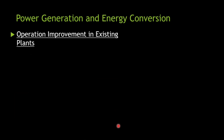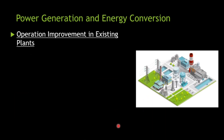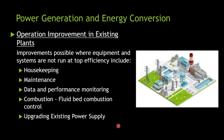For power generation and energy conversions, operation improvements in existing plants are key — that is why modernization of current power plants is important. Good housekeeping, maintenance, data and performance monitoring, and energy management information systems help track opportunities. Combustion and fluid bed combustion control, as well as upgrading existing power supply, are all ways renovation of power plants helps achieve energy conservation.